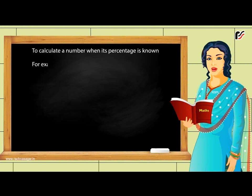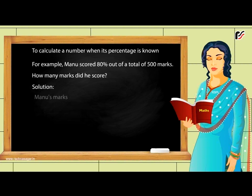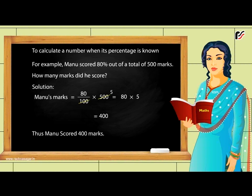To calculate a number when its percentage is known: Manu scored 80% out of a total of 500 marks. How many marks did he score? Solution: Manu's marks = 80/100 × 500 = 80 × 5 = 400. Thus, Manu scored 400 marks.